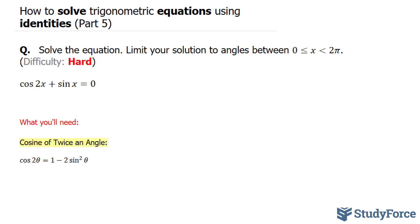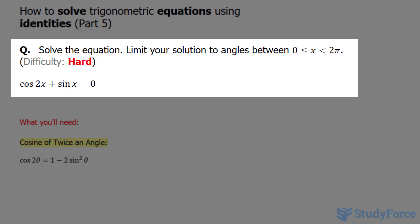The difference between this question and the previous four is that here we look at radian angles, whereas in all four of those examples in the past, we're in degrees. The question reads, solve the equation and limit your solutions to angles between zero and two pi.